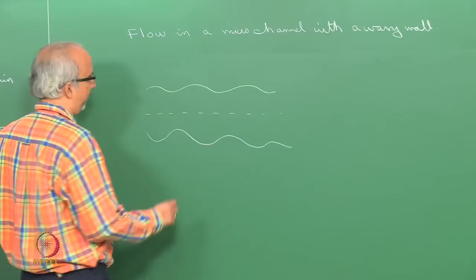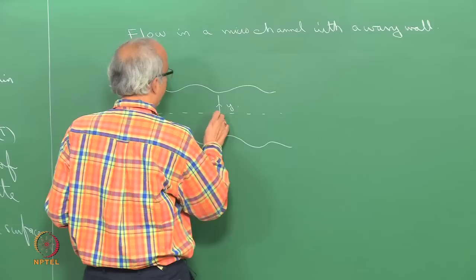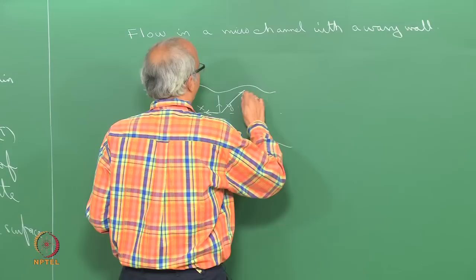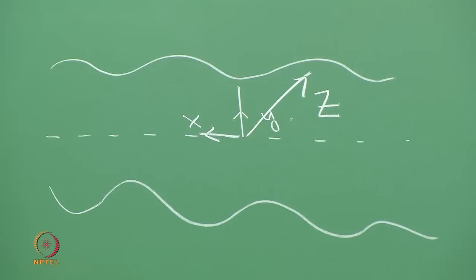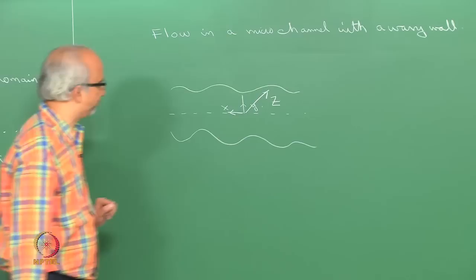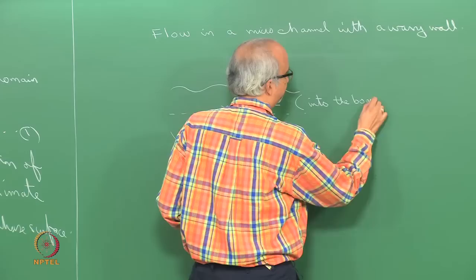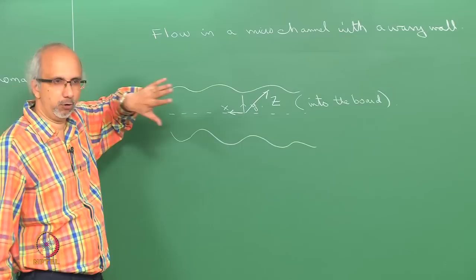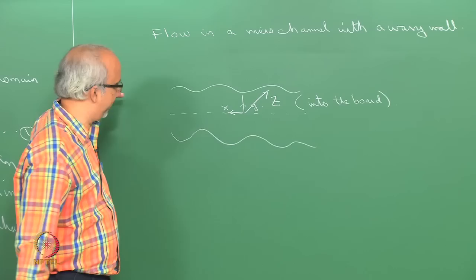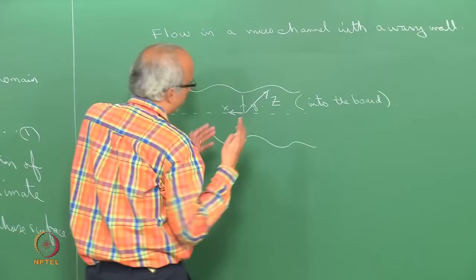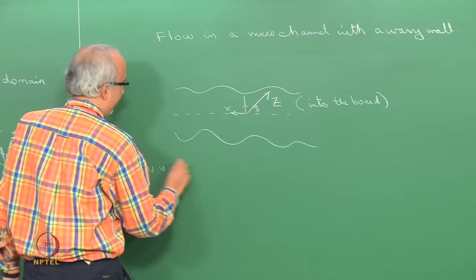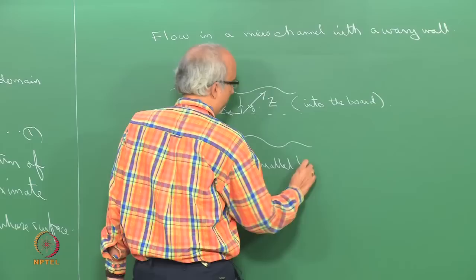Let me get my coordinate system straight: this is y and this is x, and into the plane of the board is z. I am looking at a problem where we have flow in the z direction, which is basically flow parallel to the grooves that we have. These grooves are in the z direction and the flow is in the z direction, parallel to the grooves.